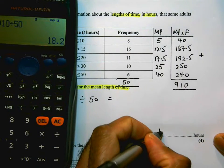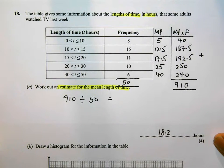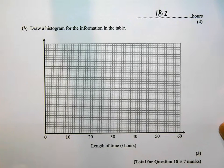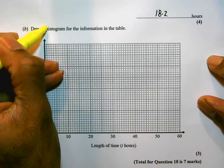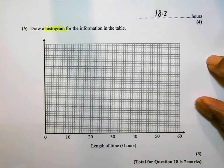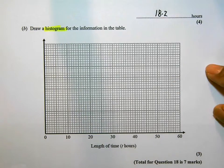So this is a pretty straightforward question, it's one which you should be able to do and not have too much difficulty in. Let's look at part B. Part B wants us to draw a histogram of the information in the table. So we've got a grid here, and a couple of things you should know.